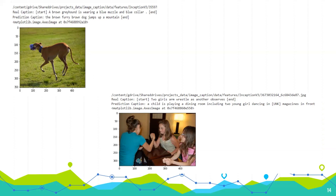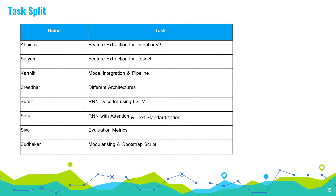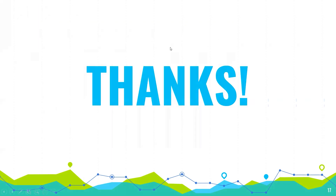For two girls arm wrestling while another observes, the model predicted 'a child is playing in a dining room including two girls dancing in front' — it picked up the dining table even though it wasn't in the real caption. This is the team split and the tasks that each member did. Thank you very much for the nice presentation.